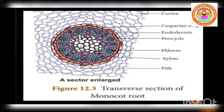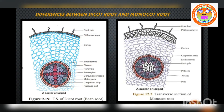The internal structure of monocot root reveals, from the periphery towards the center: epiblema or rhizodermis, cortex, endodermis, stele, pericycle, vascular tissues, and pith. So far we have discussed the internal structure of monocot root.